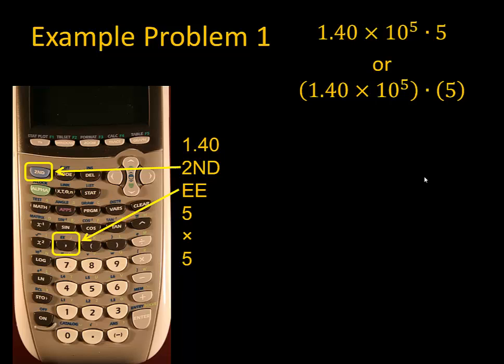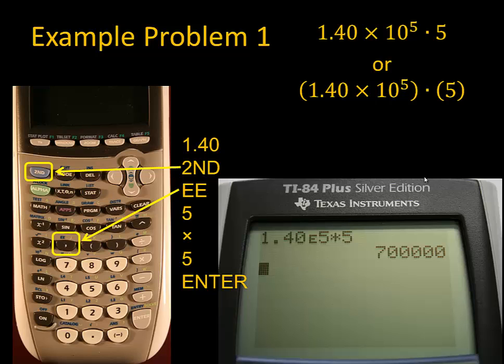Now we hit the digit 5. We're done entering numbers, so we can hit the enter key, and the calculation will be done. The display shows the result of the calculation, which is 7 followed by a bunch of zeros.